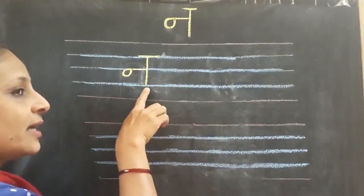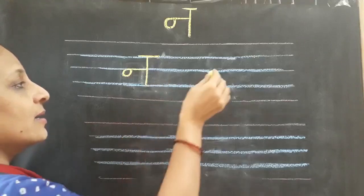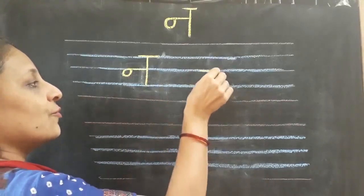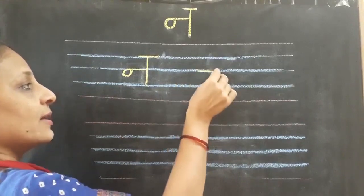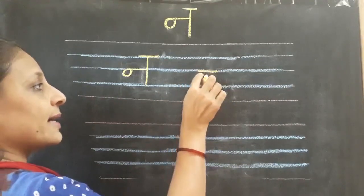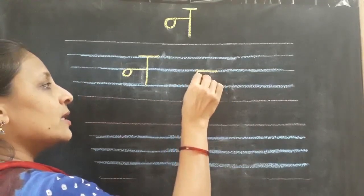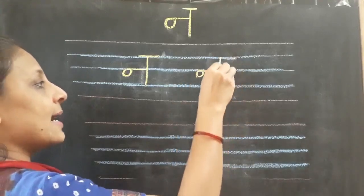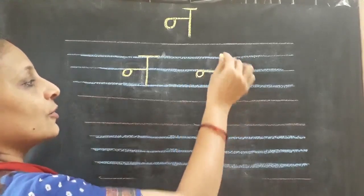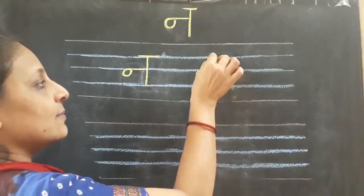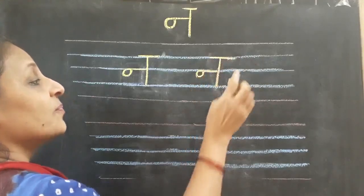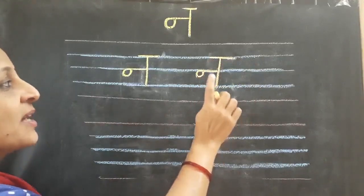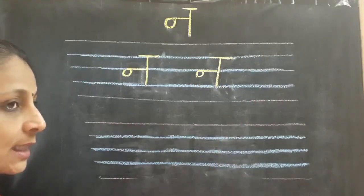Na say Nadi. Na say Nayan. Once again, we will see. Sleeping line — we have to come towards your left. Sleeping line on the second blue line. One small circle. And standing line from first to third blue line. And sleeping line overhead. Na say Nariel. Na say Naav. This way, we are going to write letter Na in our book.